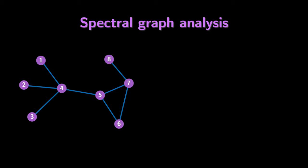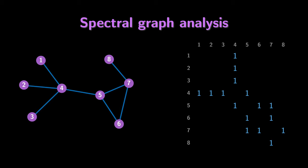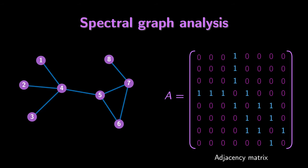Now suppose we wanted to mathematically analyze this network. One way to begin would be to look at the connectivity between the different people — assembling a grid of all connections and putting ones in the locations where two people are connected. For example, persons 3 and 4 are connected with an edge, so we put a one in the (3,4) and (4,3) positions in this grid and fill in the rest with zeros. This defines a very common tool in graph analysis referred to as the adjacency matrix, which describes all of the connections between different nodes in a graph.